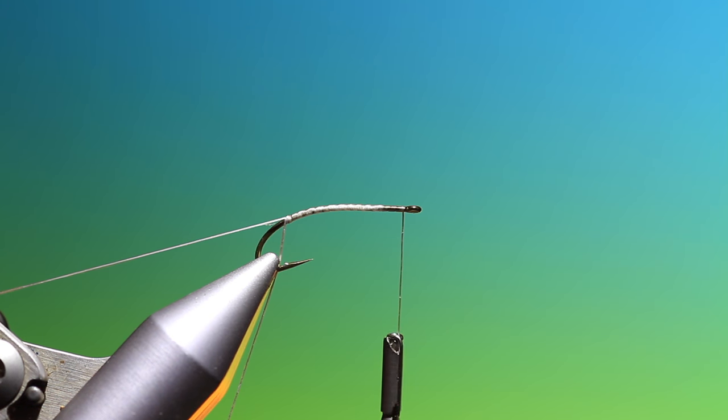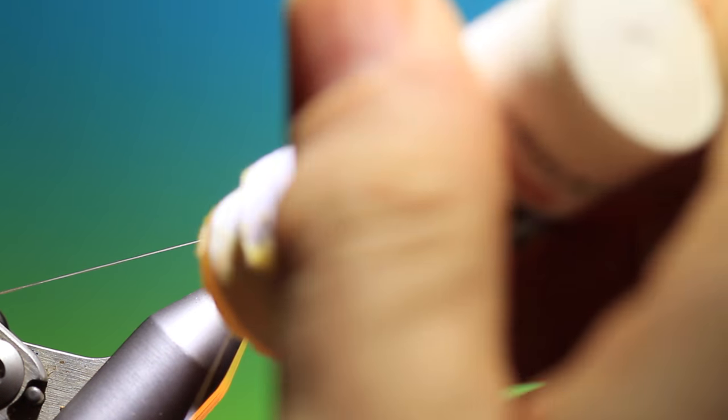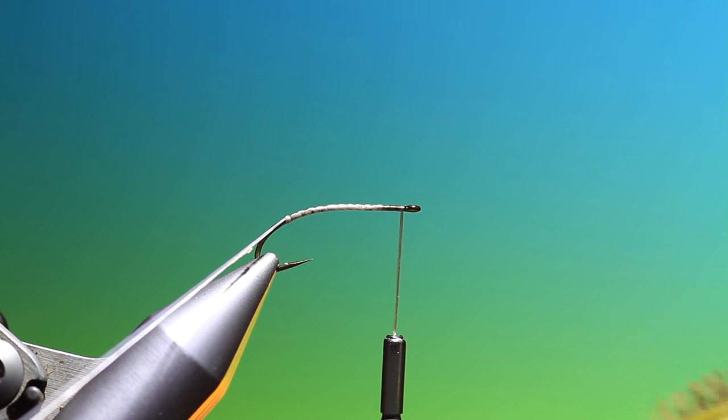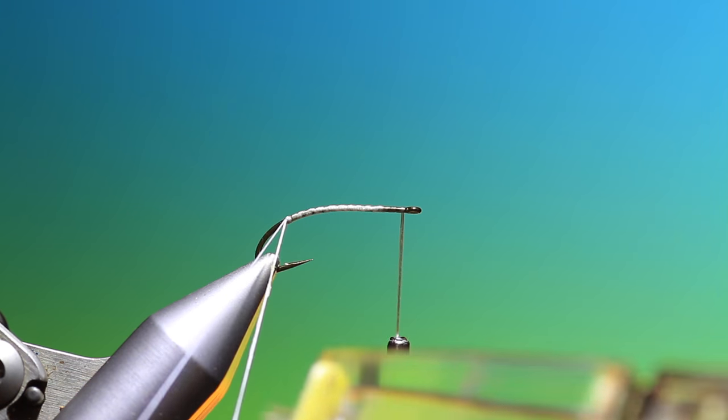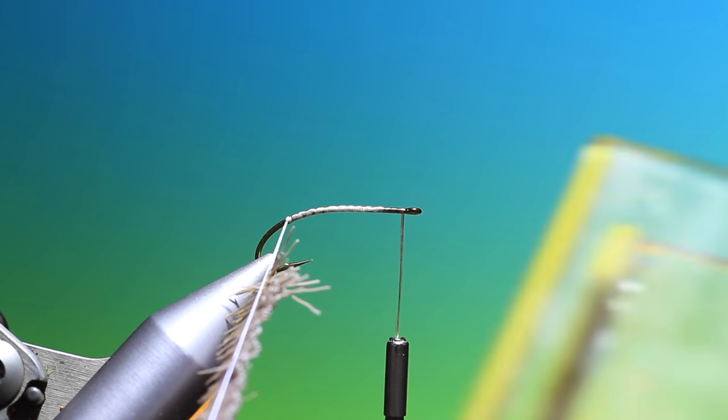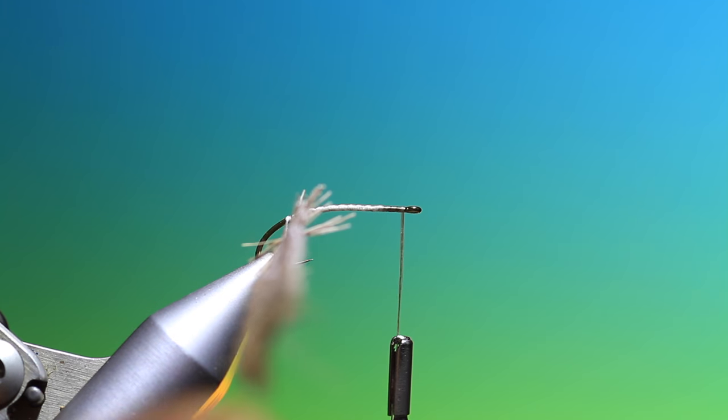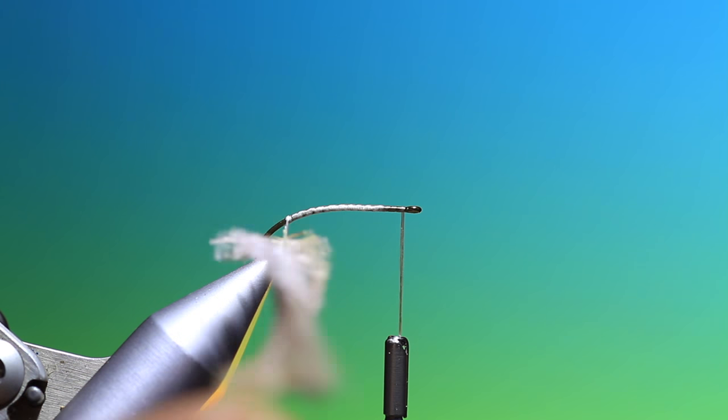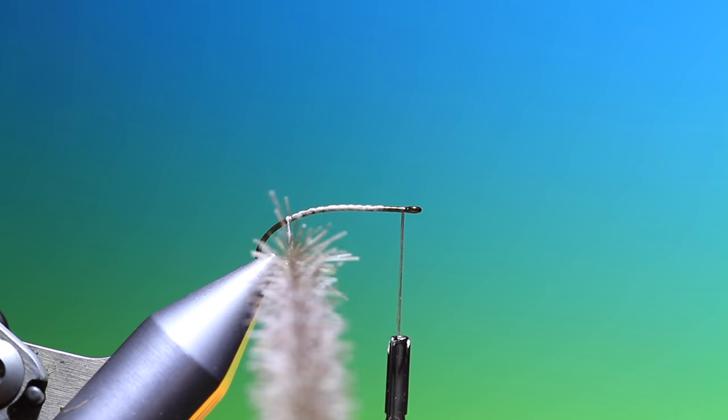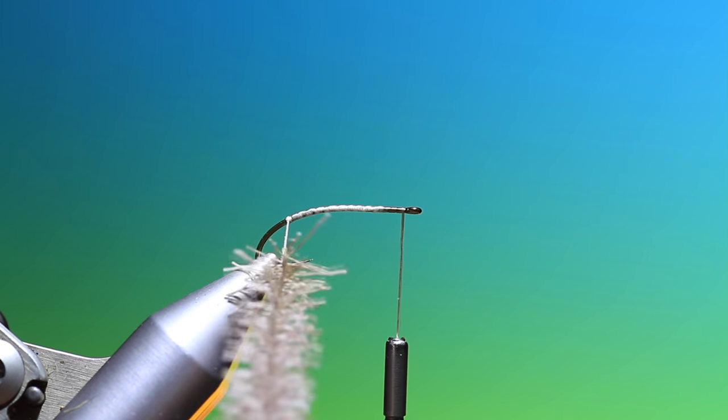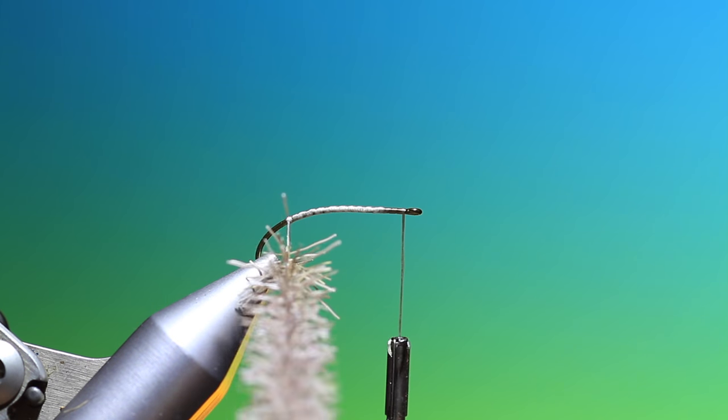And what we need is a touch of tacky wax just to hold the deer hair in position, stop it slipping. Then I have a petitjean clip with a strip of deer hair in there. We'll trap that in the loop, like so. Remove those, spin that up into a dubbing brush. Make sure it's nice and tight, that's looking good.